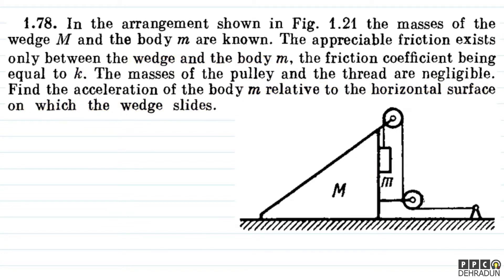So, bachon, sawaal mein jaisa ki hum log dek pa raha hai, is jagah par friction exist karta hai, aur friction coefficient mu ki value k dv hai. Clear hai ye baat? Aur humare ko masses bhi diya wai hai na, capital M aur small m diya ho hai.